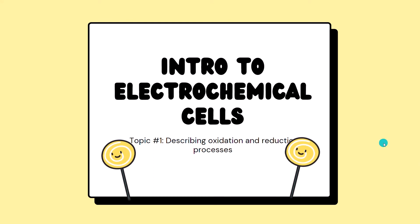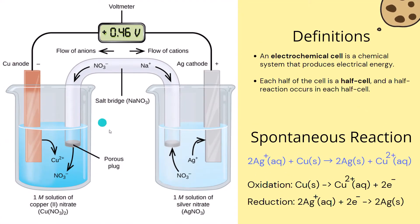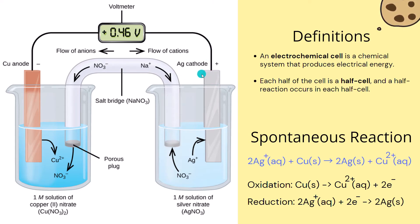We will learn more about electrochemical cells later in the unit. Here is just an introduction. To your left is an electrochemical cell — a system that produces electrical energy. The voltmeter measures the voltage across the two electrodes. An electrode is basically a conductor. And this is a salt bridge.